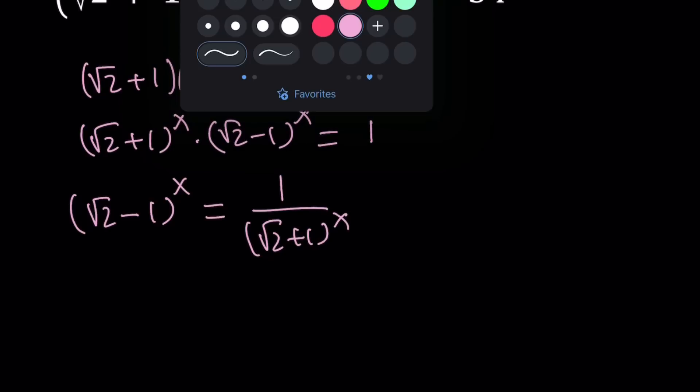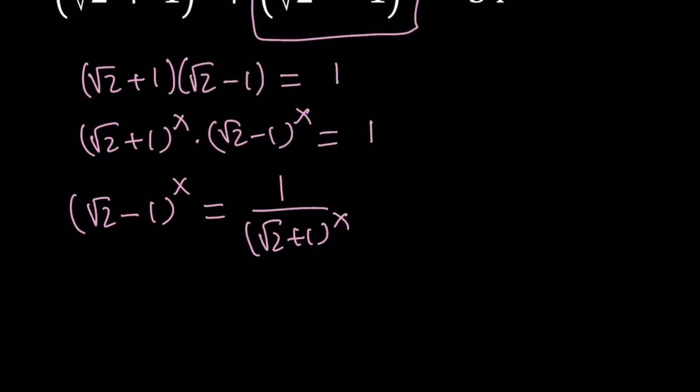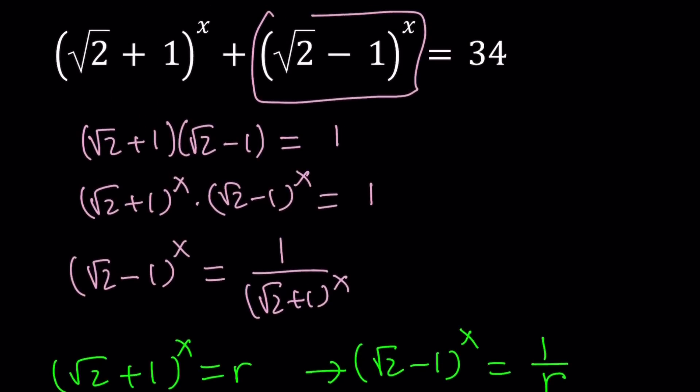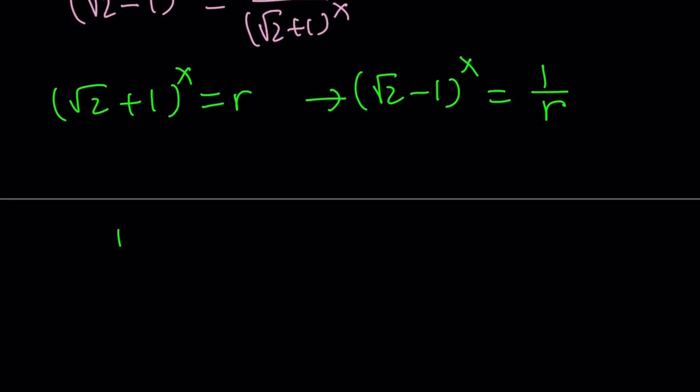So we'll do some naming here. Let's go ahead and name this square root of 2 plus 1 to the power x something. How about r? This implies r for radical. Square root of 2 minus 1 to the power x equals 1 over r. And now our equation becomes r plus 1 over r equals 34.